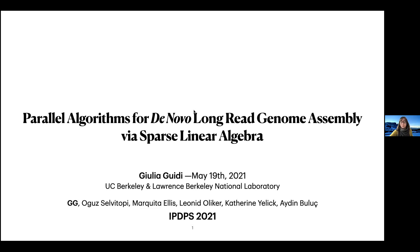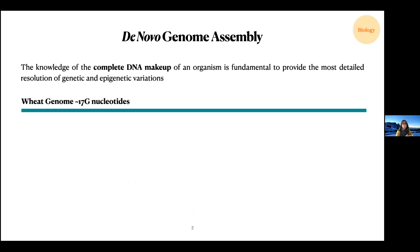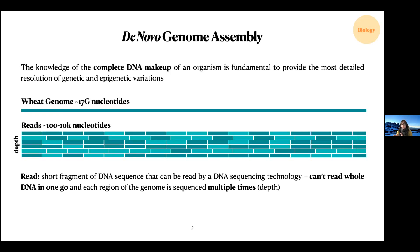In terms of the problem, de novo assembly is important because we want to know the complete DNA make-up of an organism in order to study the genetic and epigenetic variations. The problem is that current sequencing technology has limitations in terms of chemistry and physics. So if we have a genome sample — for example, the weed genome — the sequencing machine cannot read the whole genome in a single run. We need to run the sequencing machine multiple times, and what we get is a lot of short DNA sequences that we call reads.